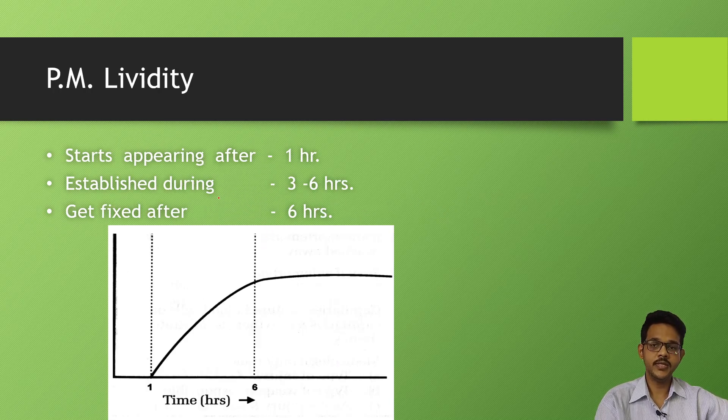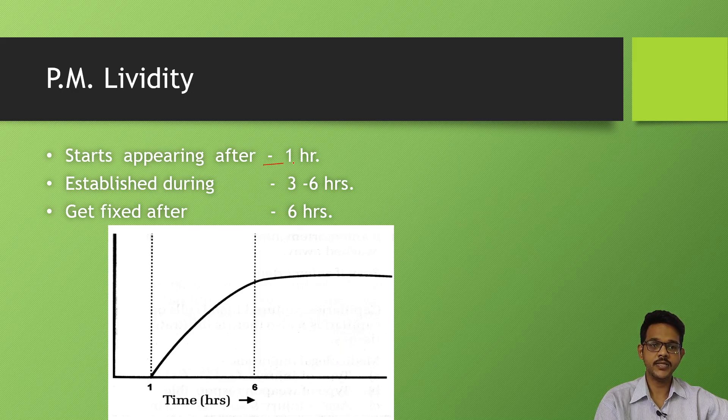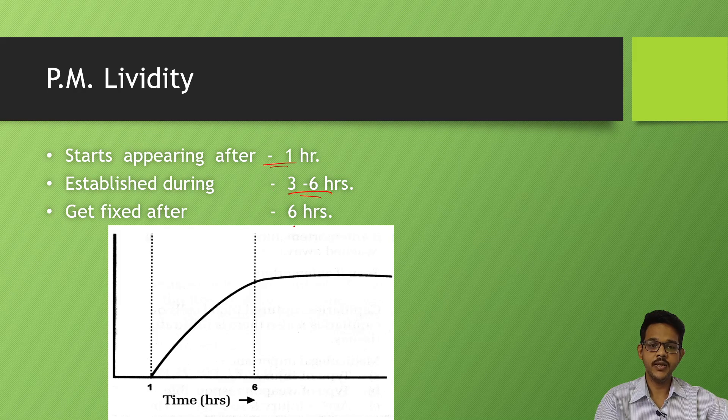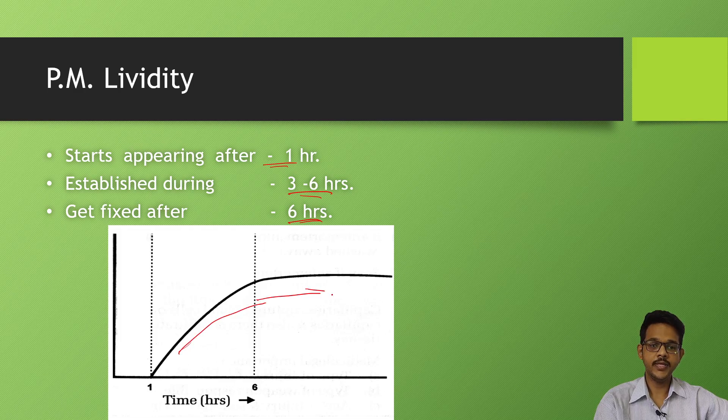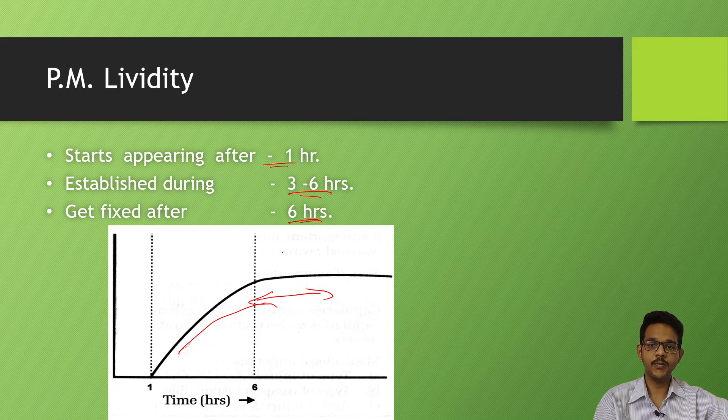Post-mortem lividity, that is the blood accumulation in the back of the body, appears and starts at one hour. It establishes at three to six hours and is fixed up to six hours. So if the body is not warm and there is completely fixed post-mortem lividity, it means the body is about more than six hours after death.